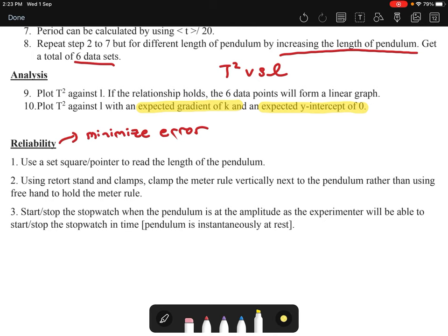Number three, maybe I say start and stop the stopwatch when the pendulum is at the amplitude as the experimenter will be able to start and stop the stopwatch in time because when the pendulum is at the amplitude, it is at instantaneous rest. So if I start and stop the stopwatch at the amplitude, I find it easier to start and stop compared to starting and stopping the stopwatch at the center of the pendulum, because at the center of the pendulum the pendulum is moving too fast.